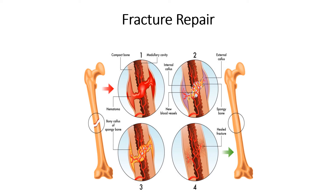Fracture repair کے بارے میں — bone ایک ایسا tissue ہے جو خود کو without scarring repair کر لیتا ہے اور body اس repair کو facilitate کرتی ہے۔ یہ repair process چار phases میں ہوتی ہے۔ سب سے پہلی phase ہے hematoma formation۔